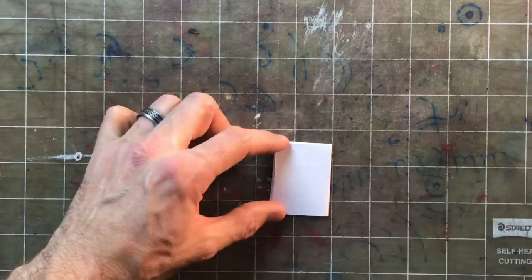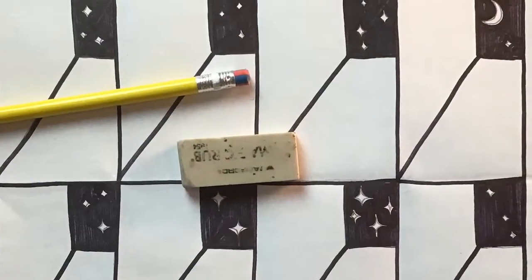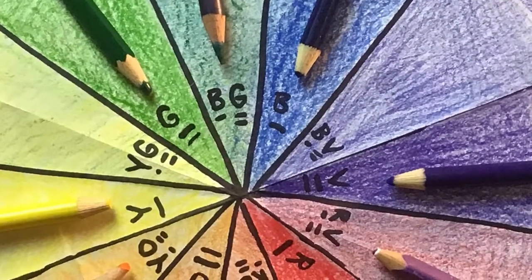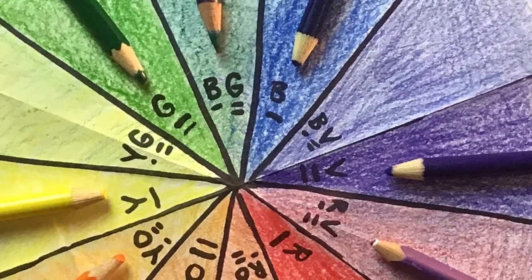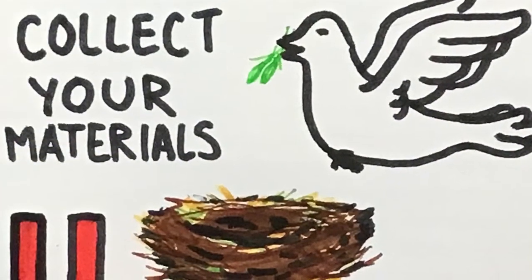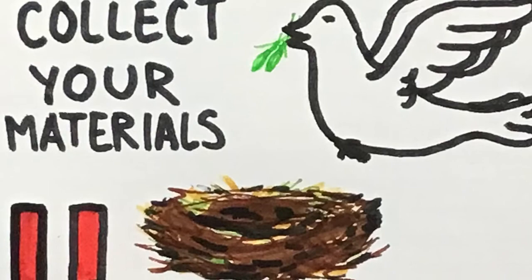In the first part of our lesson today we're going to be making our optical illusion art or op art and then in the second part of today's lesson we'll be looking at our color wheel to figure out how we want to color ours. So go ahead, pause the video and collect your materials and get ready to start.